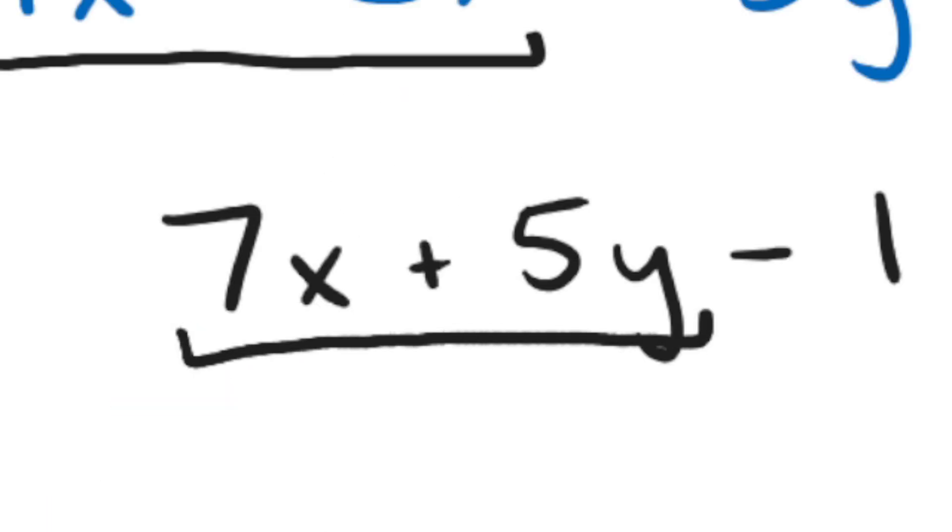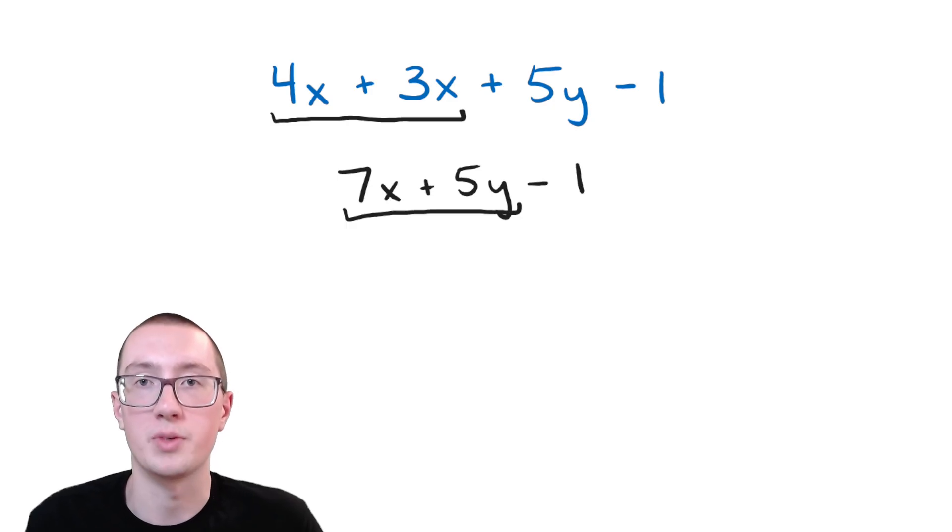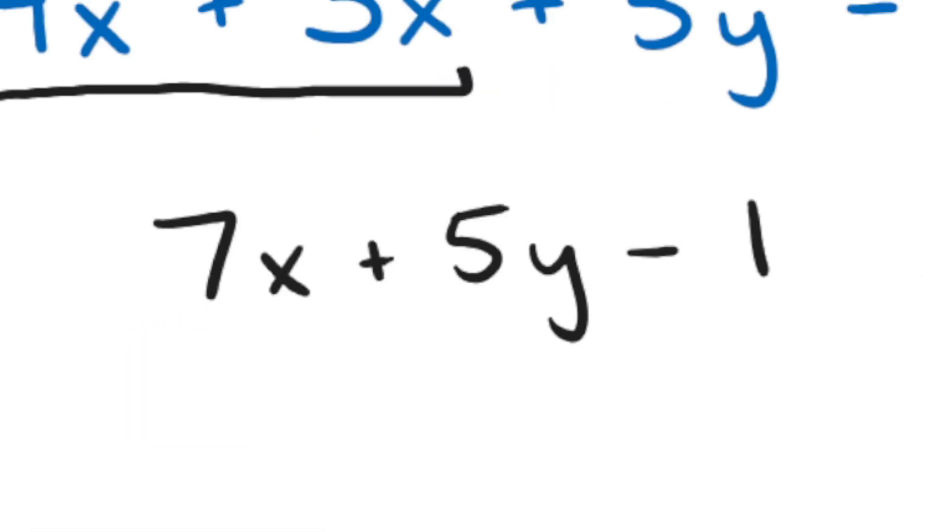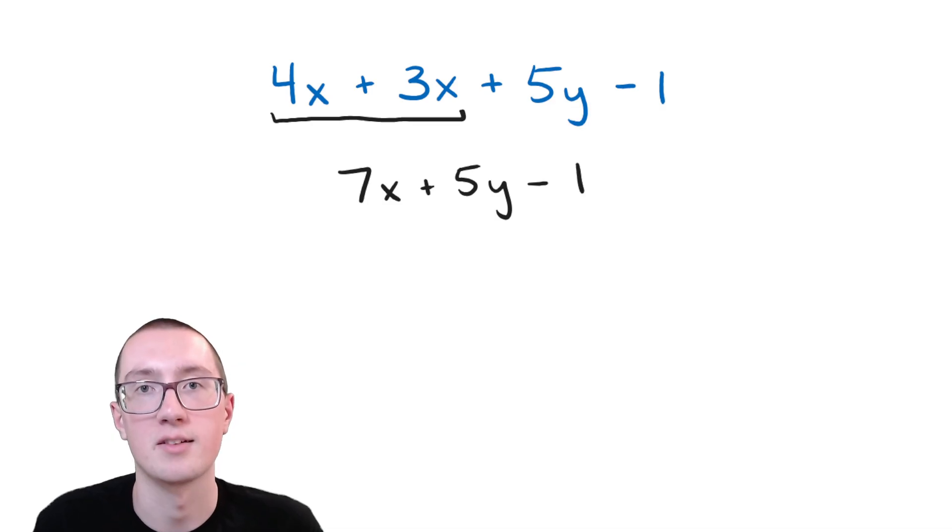But what about this? Can you combine these? Well, actually, no, because the combining like terms part, the like terms means that they have to have the same letter. So if you have an x in one of them and a y in the other, you can't add or subtract them. So that would mean that this is the most simple version of what we had up here at the beginning.